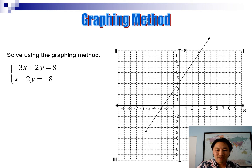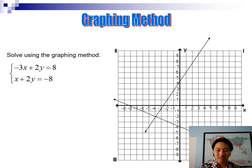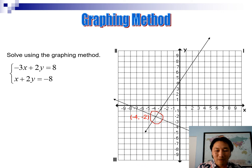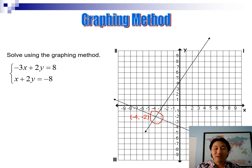The solution to the system is where the two graphs intersect — in this case, the point negative 4, negative 2. The graphing method is the least accurate method because if your line is off by just a little bit on graph paper, your answer will be wrong. To make it more accurate, we're going to use graphing calculators.